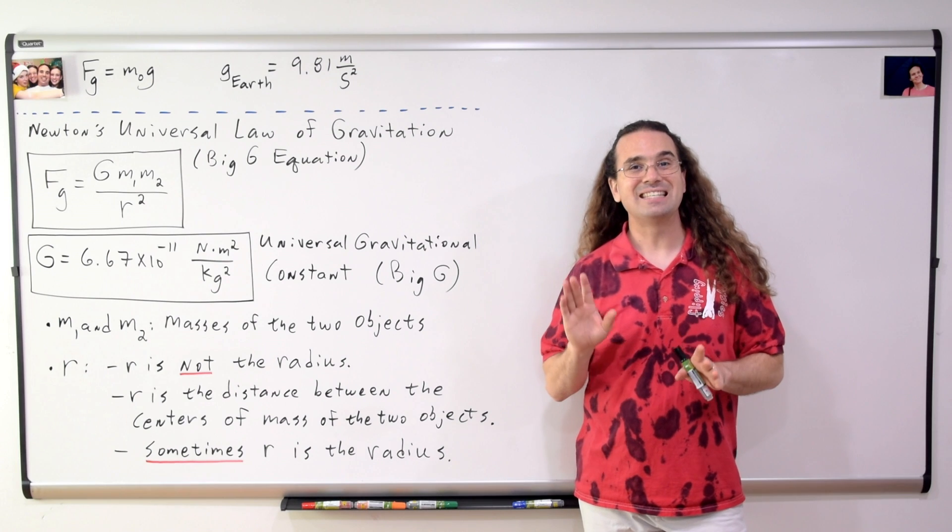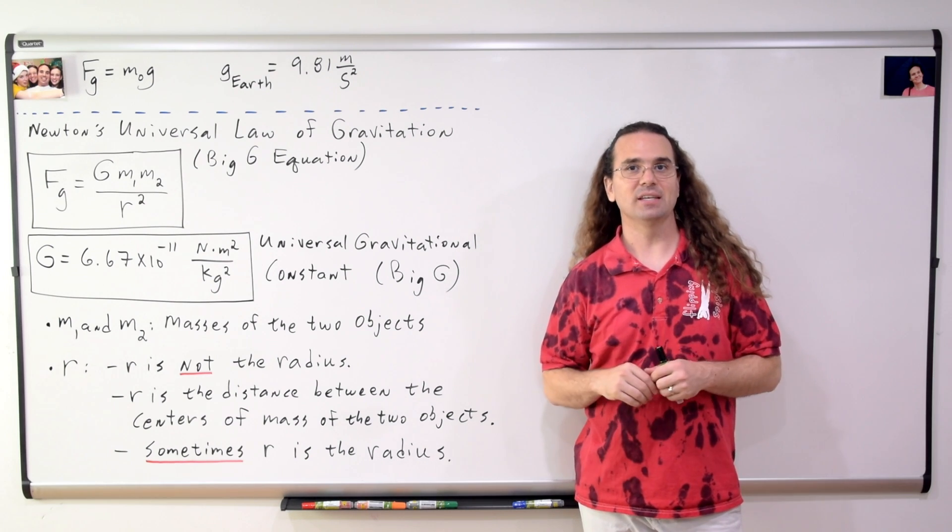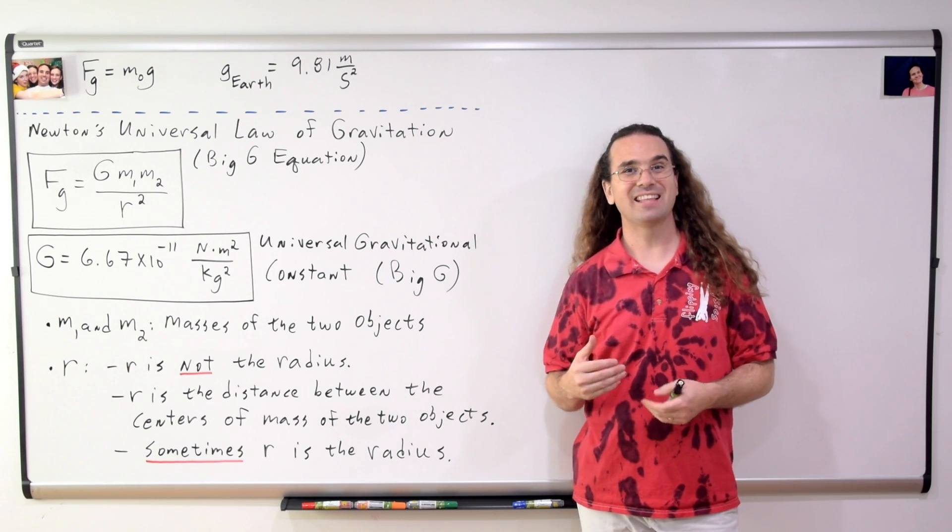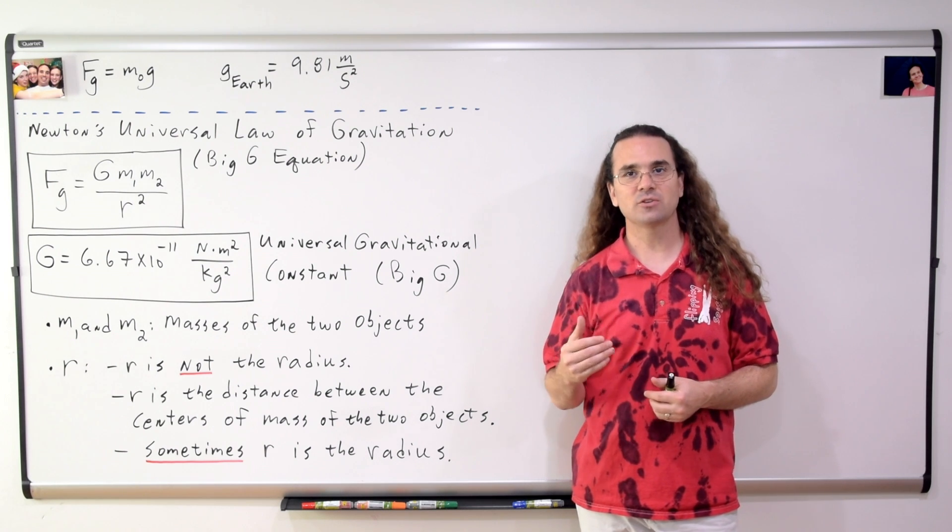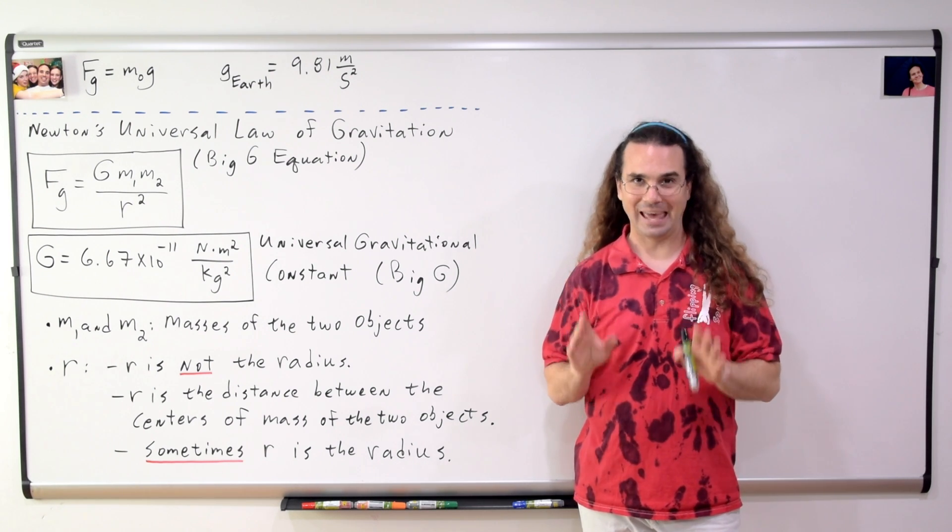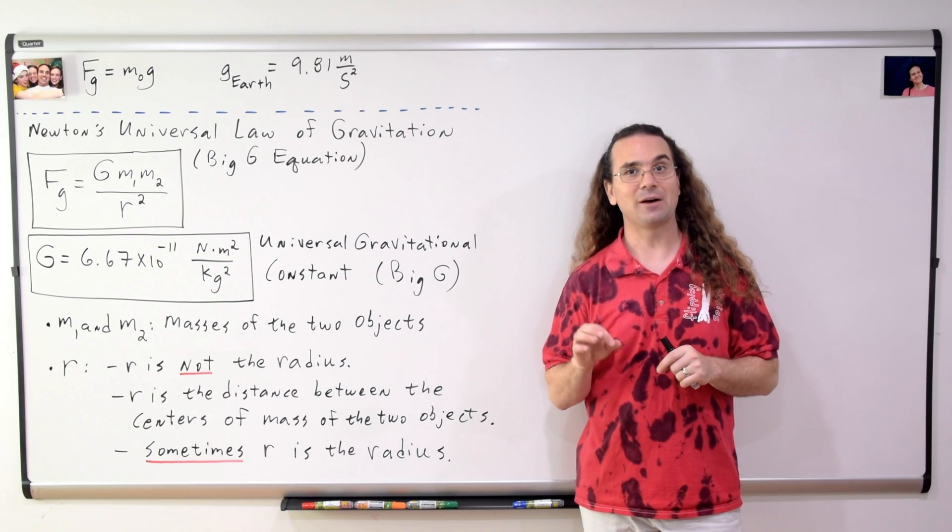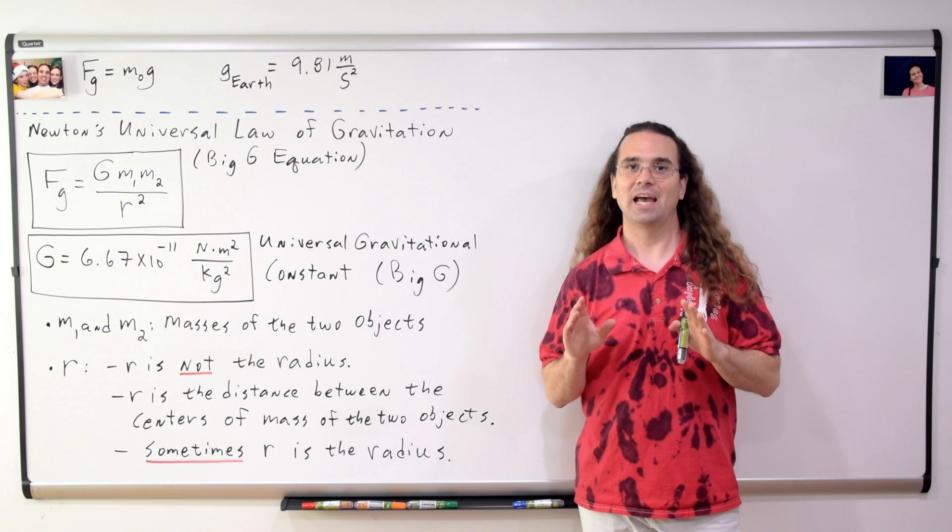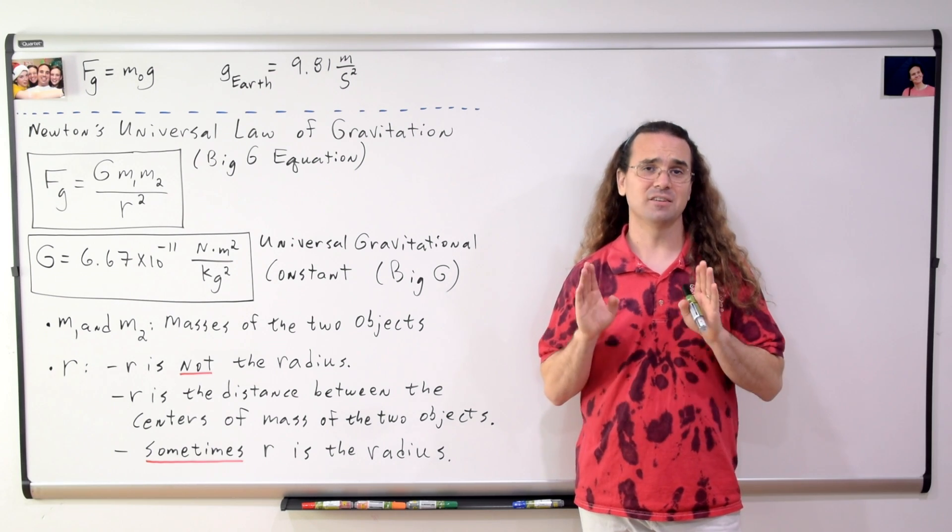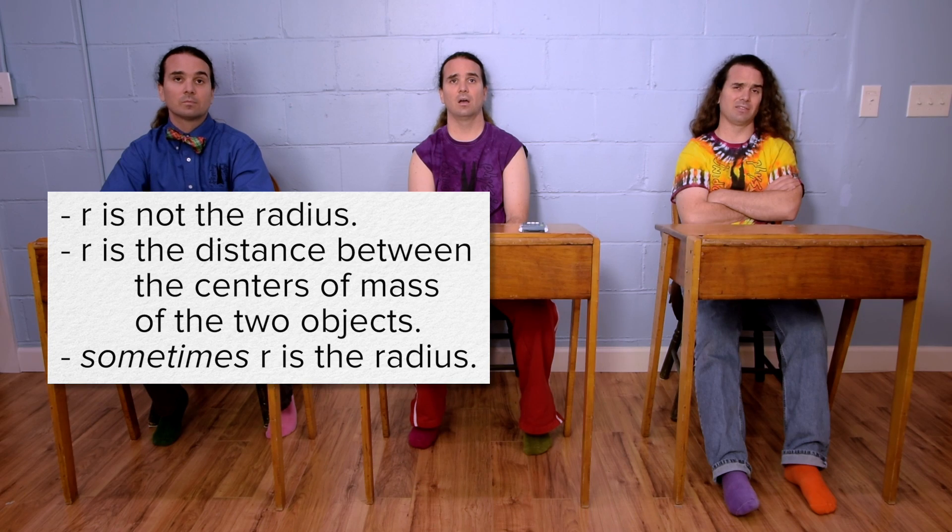So, r is not defined as the radius. The definition of r is that it is the distance between the centers of mass of the two objects. This can be confusing because sometimes r actually works out to be the radius. However, r is not defined that way. r is not the radius, but sometimes it is the radius?